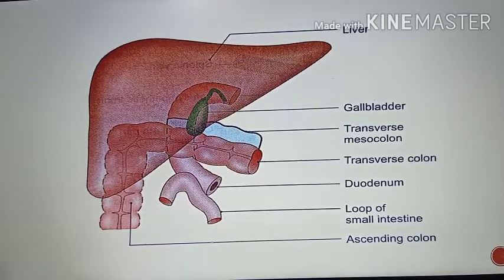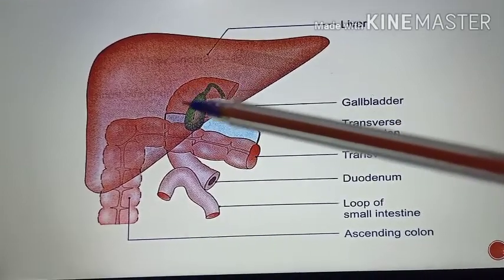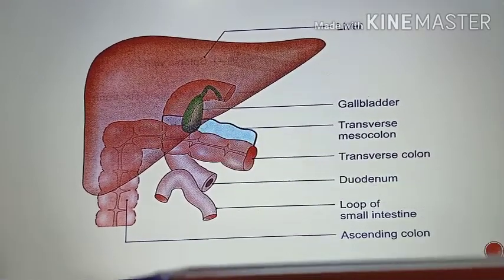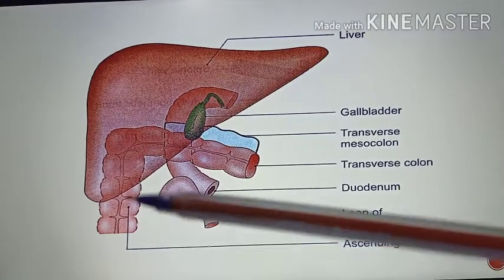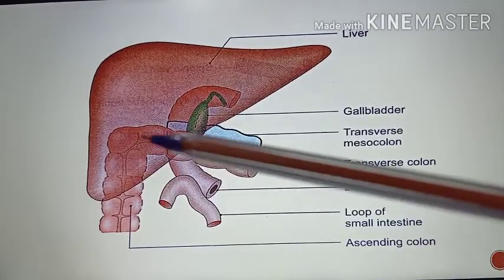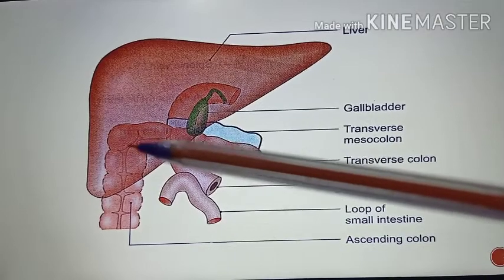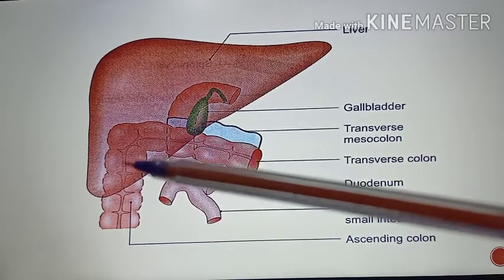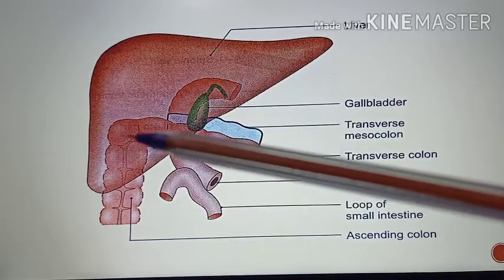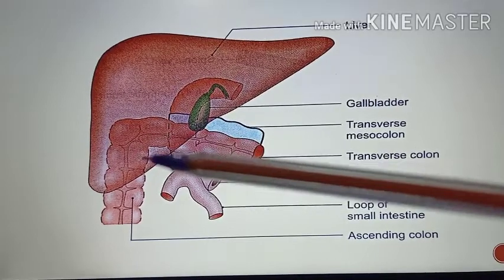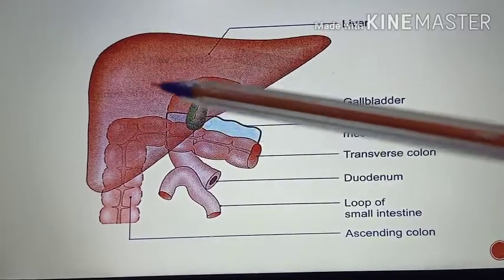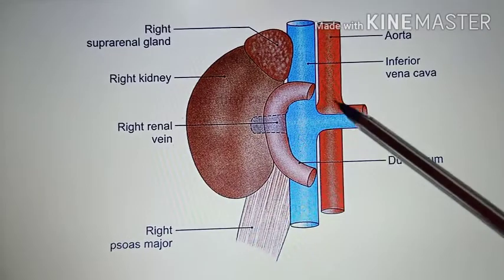Coming to the lateral relations of the second part of the duodenum — from below upwards — you have the ascending colon, then the right colic flexure which is the bend it is taking, and then the right lobe of the liver.